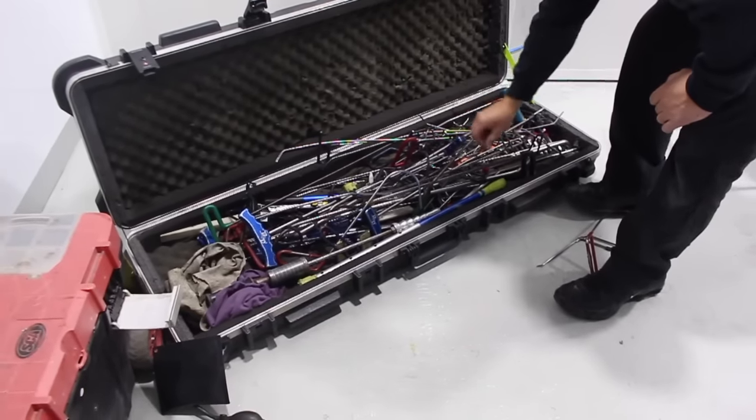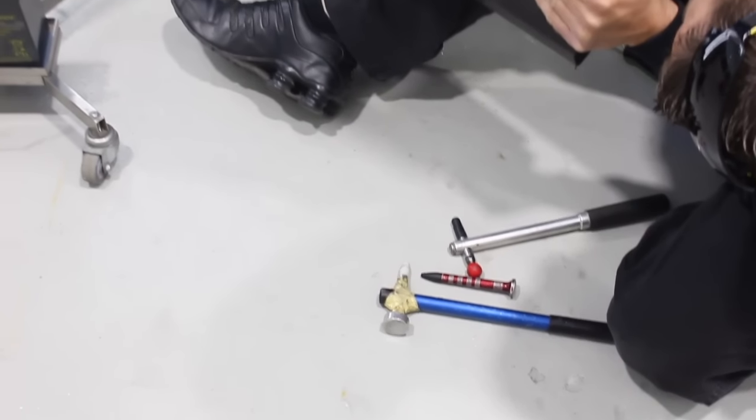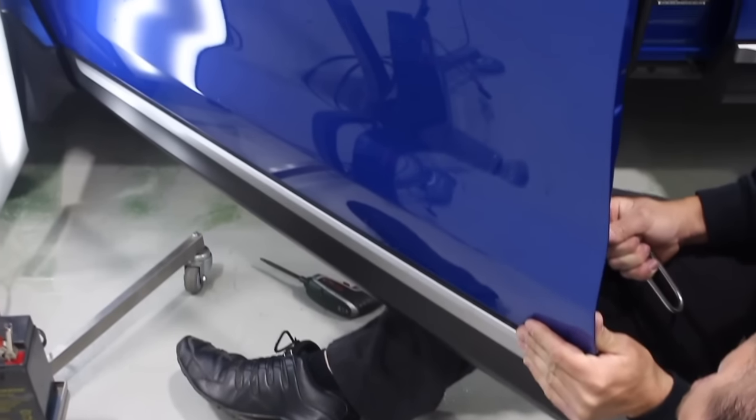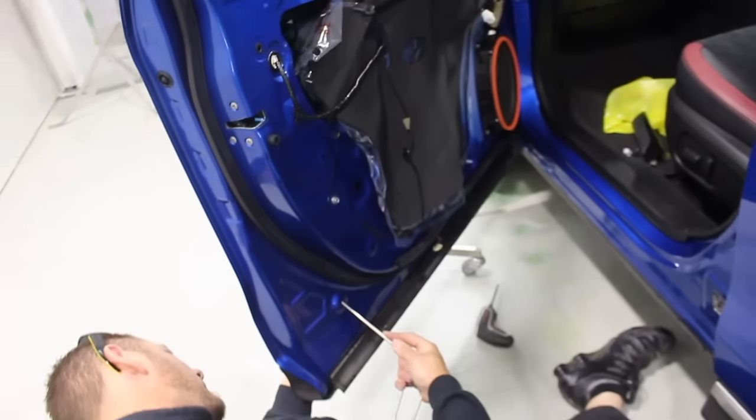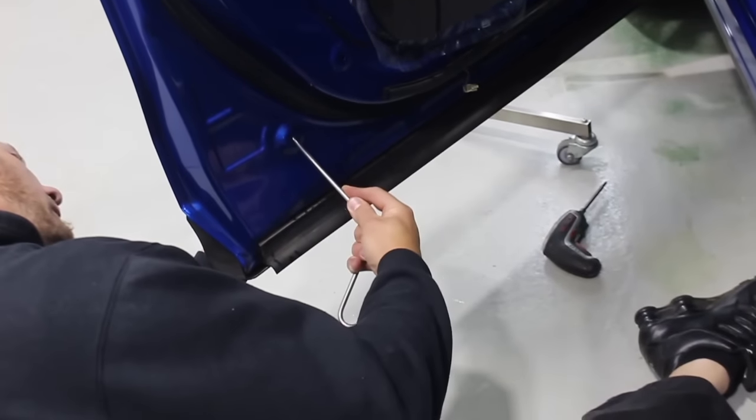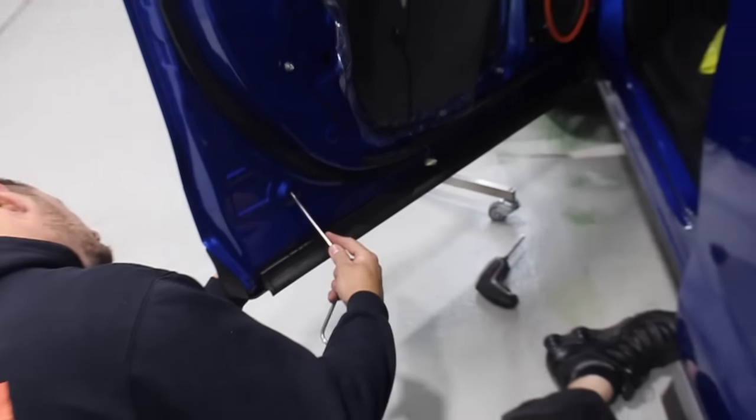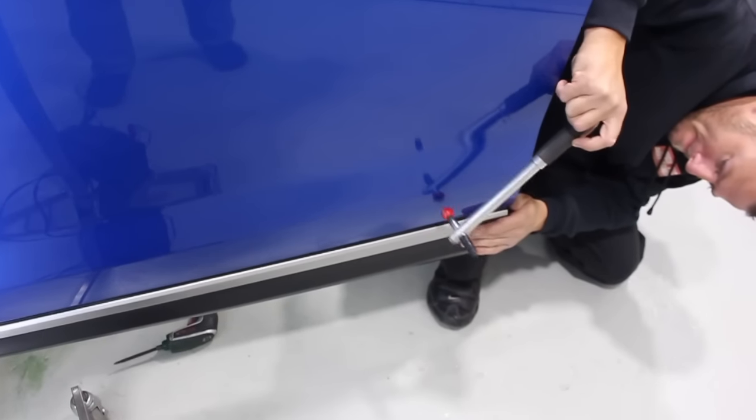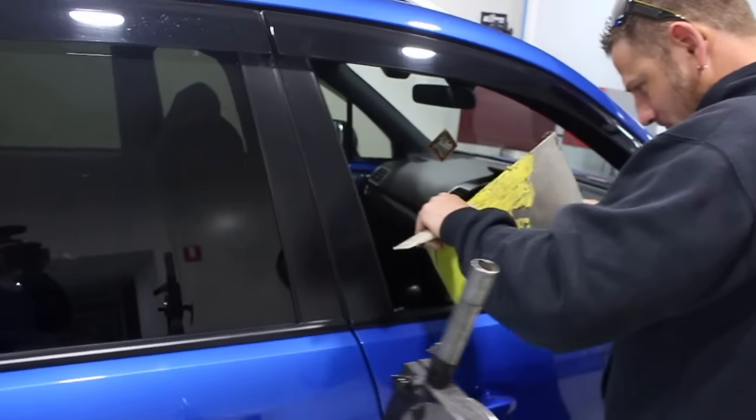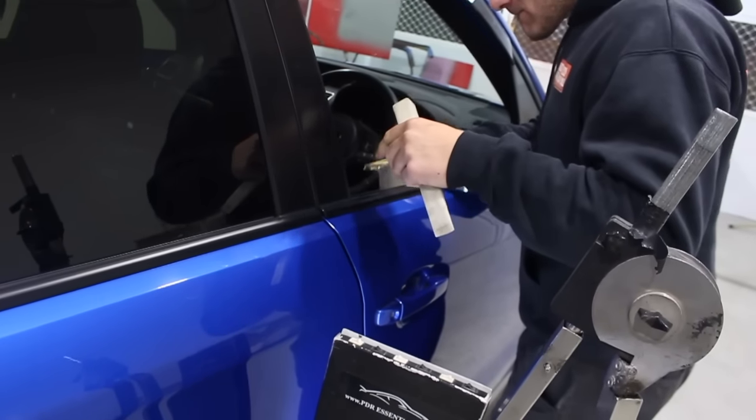A professional paintless dent removal guy will have a massive chest of rods and bars, different hammers and little dollies, and especially these lights. The lights show up all the dents really well. He's mainly trying to push the dents out using the rods and tools rather than pulling them with the puller at risk of pulling the paint off the panel. He'll use different hammers and different dollies and rods to push the dents out from behind the panel.